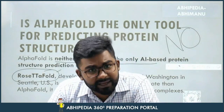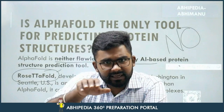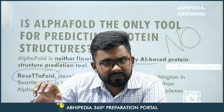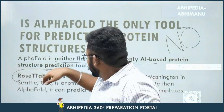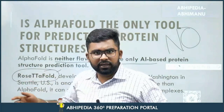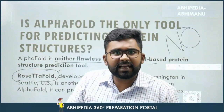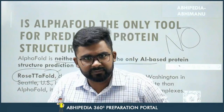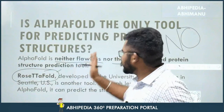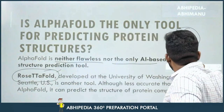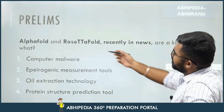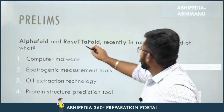If you hear 'fold, fold, fold' in a question or see it in statements, these applications — AlphaFold and RosettaFold — are used for predicting protein structures or predicting amino acid folds. A simple question: AlphaFold and RosettaFold, recently in news, are what kind of tools?